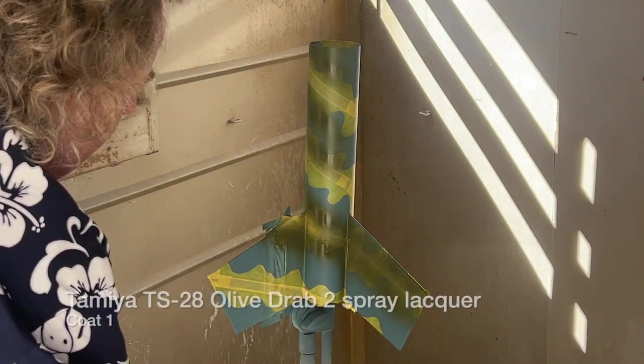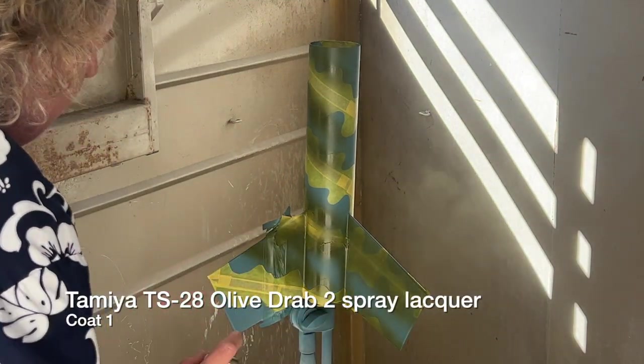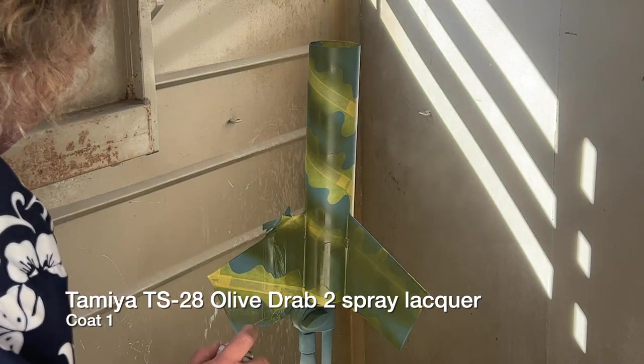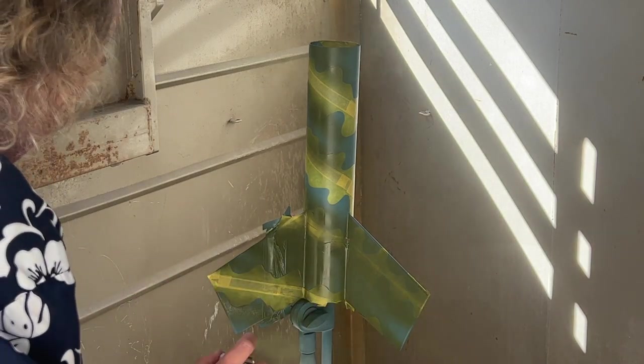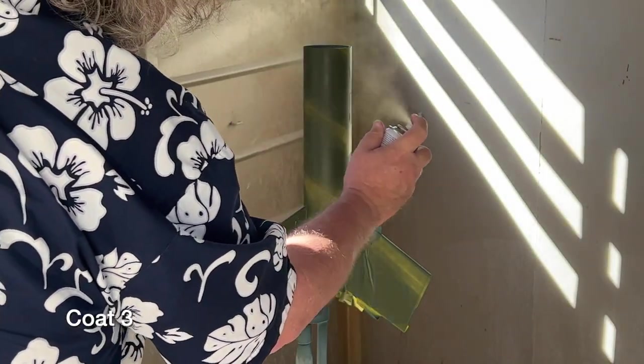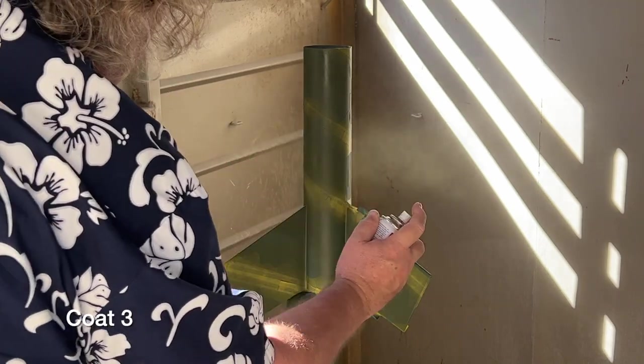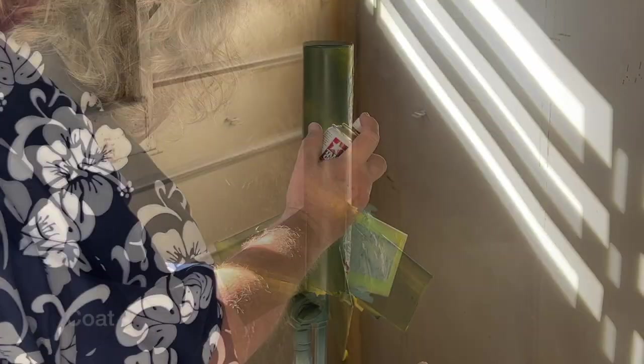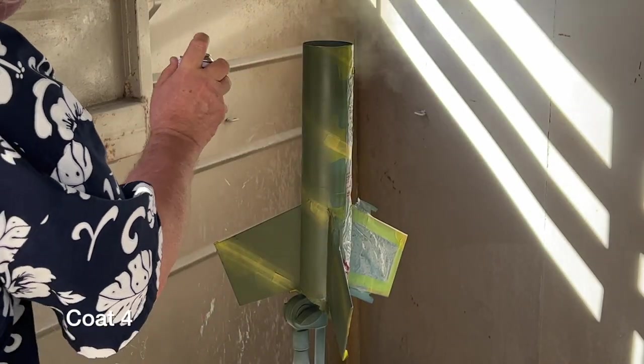The lacquer we're using here is Tamiya's Olive Drab 2 spray. Now it differs from the Olive Drab 1 lacquer in that it has a slightly more worn and weathered appearance that I like. We'll put four light coats on the model. Emphasis on light. We don't want the paint migrating underneath the tape that we've laid down.